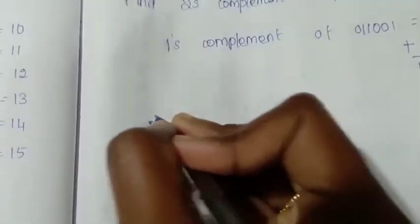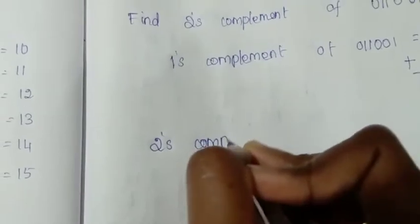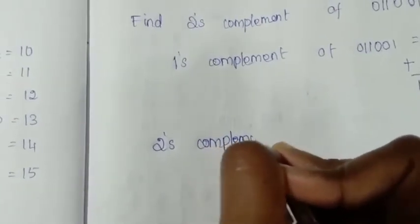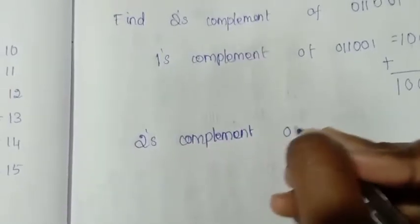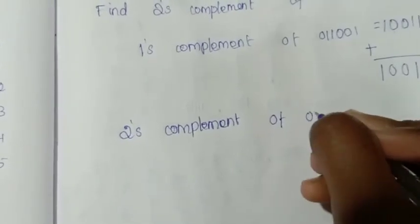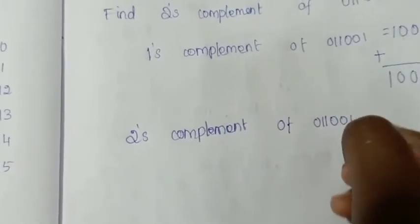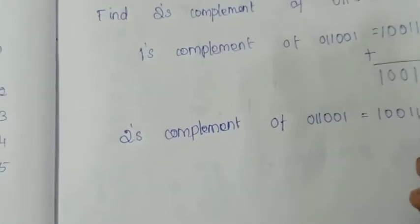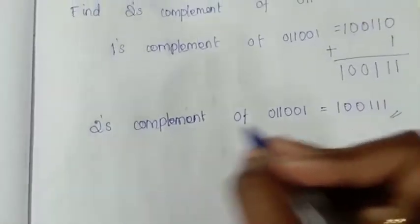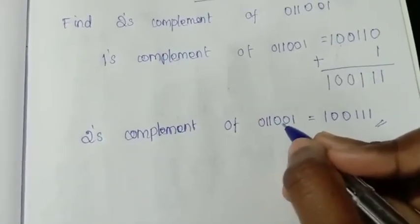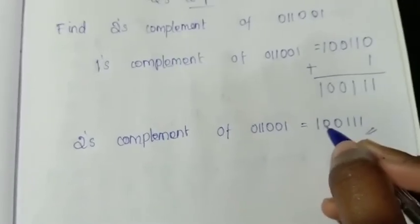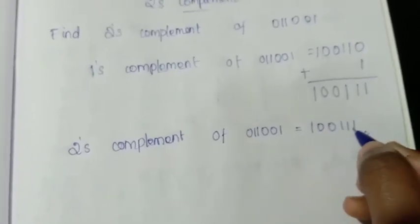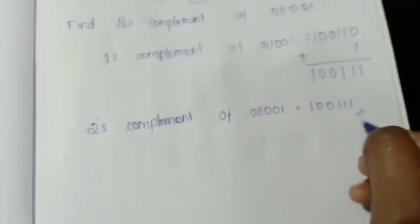Then you can write the two's complement. Two's complement of 0, 1, 1, 0, 0, 1 is equal to 1, 0, 0, 1, 1, 1. This is the two's complement of the binary number.